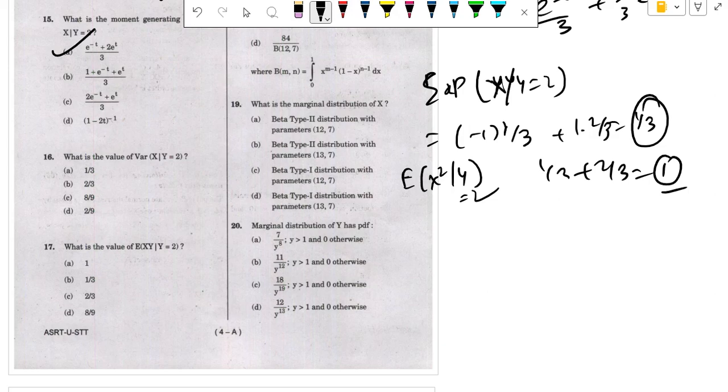In this case, variance of x given y equals 1 minus 1/9, so C is the answer in this case.